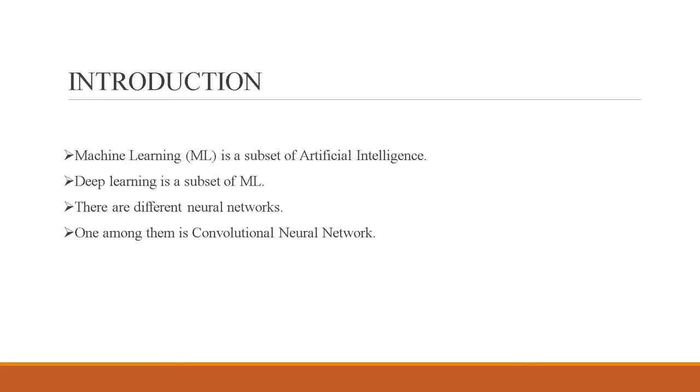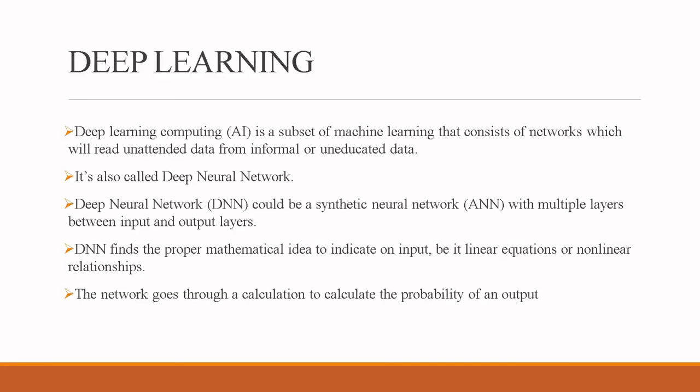Machine learning is a subset of artificial intelligence, and deep learning is a subset of machine learning. There are different neural networks used, one of which is the convolutional neural network. Deep learning is a way to extract useful patterns from data in an automated way. It consists of networks that can read unstructured or unlabeled data, and is also called deep neural network (DNN). A DNN has multiple layers between input and output layers and finds the proper mathematical relationship — whether linear or non-linear — calculating the probability of an output.